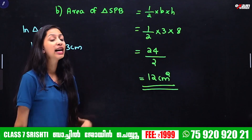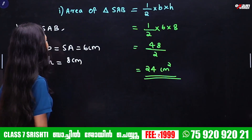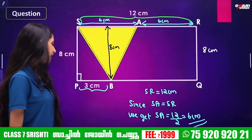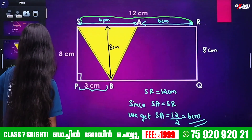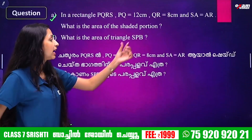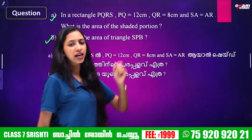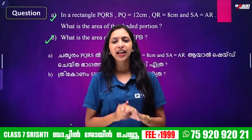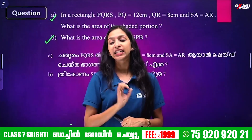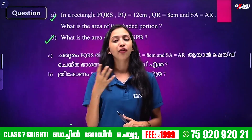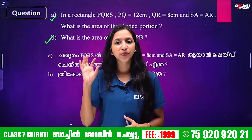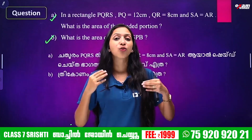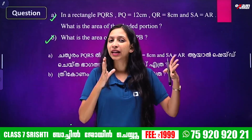The answer for triangle SPB is 12 cm². We answered two questions: the area of triangle SAB is 24 cm² and the area of triangle SPB is 12 cm². We learned about the area of triangles section using the formula half BH. We will discuss more examples in our channel.